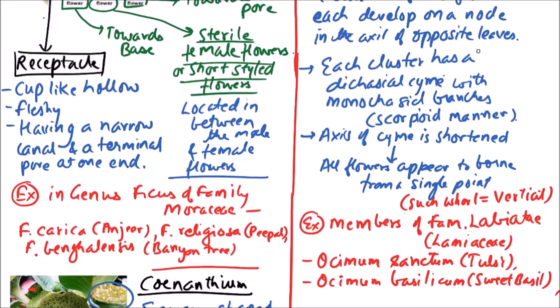Other examples include Salvia, Coleus, Leucas, and Leonotis.